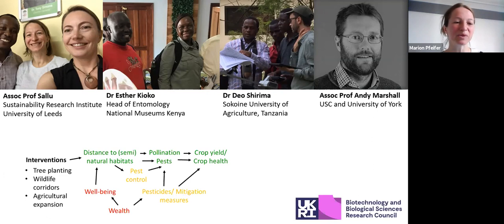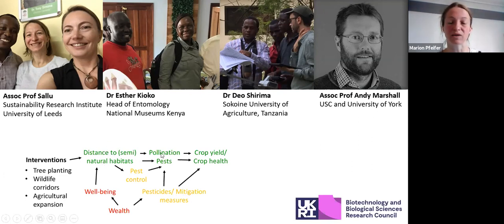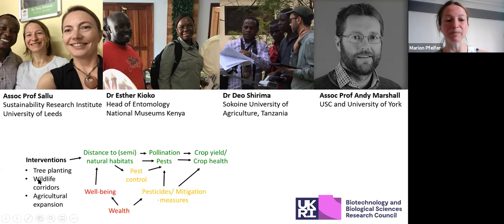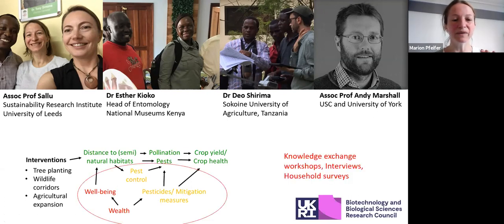We started with a simple drawing. The key idea is that distance to natural habitats affects how many insects you find on the cropland — for pollination or as pests — which affects crop yield and health. Then we considered social components: pest control techniques, use of chemicals versus natural pest control, and how these are influenced by people's well-being and wealth. With this system understood, we could then plan how an intervention like tree planting would affect it. But then we realised that was too simple.